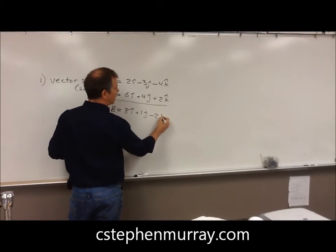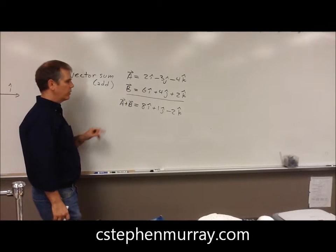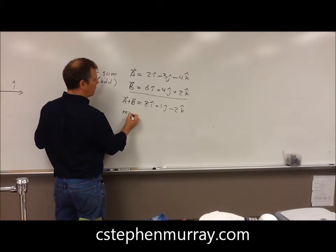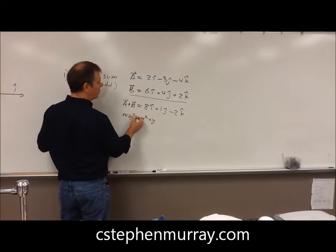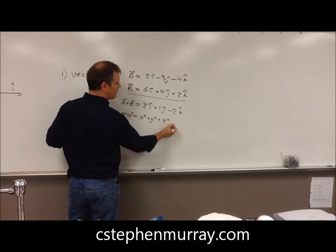And then minus 2k-hat. That gives us our vector a plus b. But what about the magnitude? The magnitude squared would equal x squared plus y squared plus z squared.